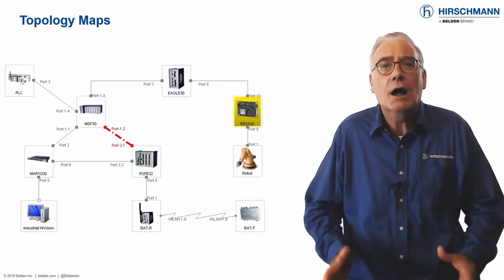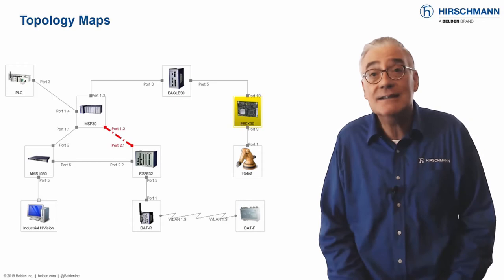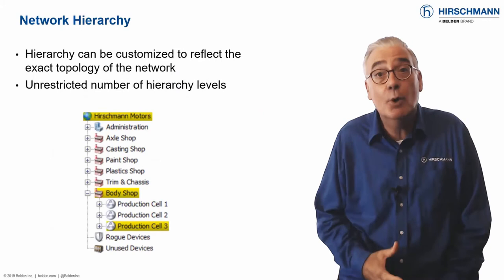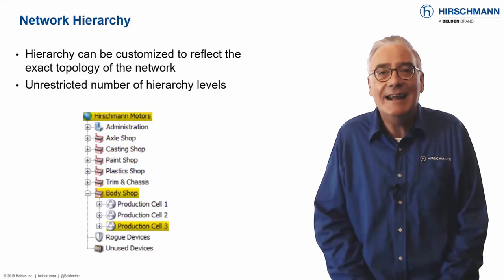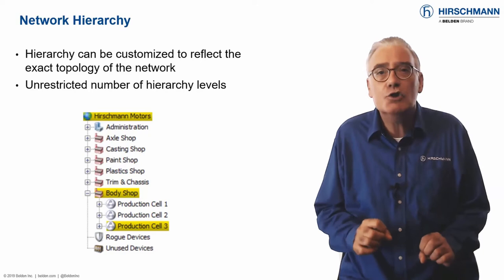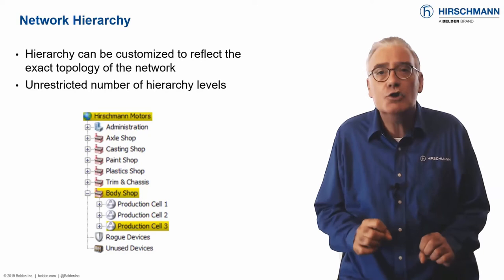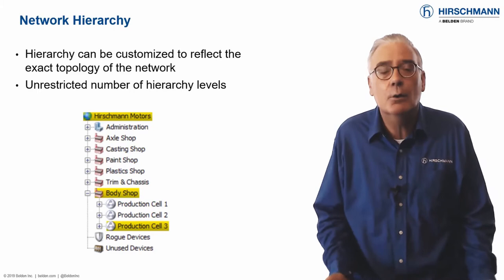All components are color-coded for status, and every element of the display can be customized, which means you can design your screens to provide strictly the information you require. If your network is small, you can almost certainly fit all devices on one screen. If your network is larger, your display will need to be clearly structured. The hierarchy function allows you to display your network topology maps in a tree structure. Each branch supports sub-branches, providing ever-increasing levels of detail down to individual components of a single device if required, giving you precisely the level of detail you need.